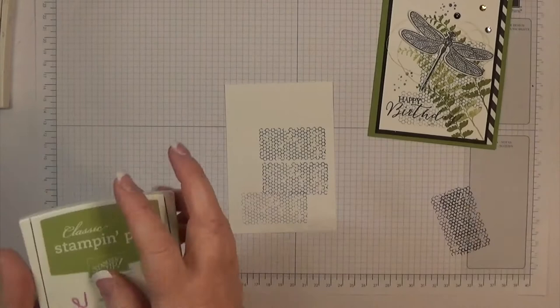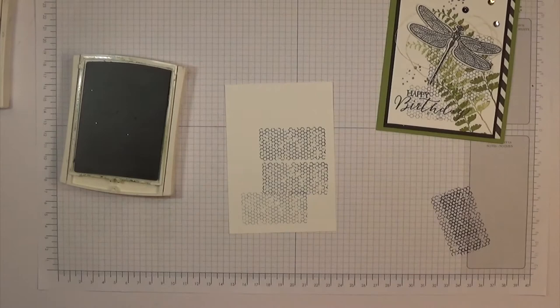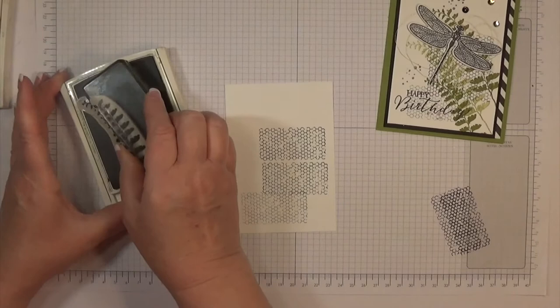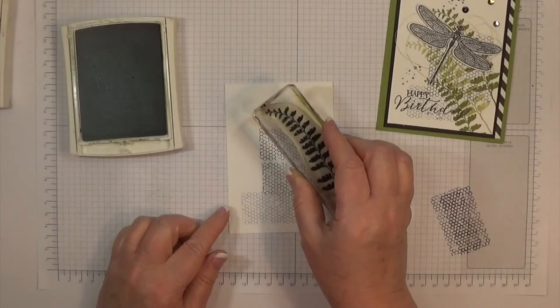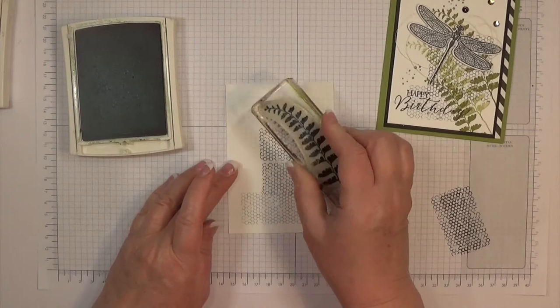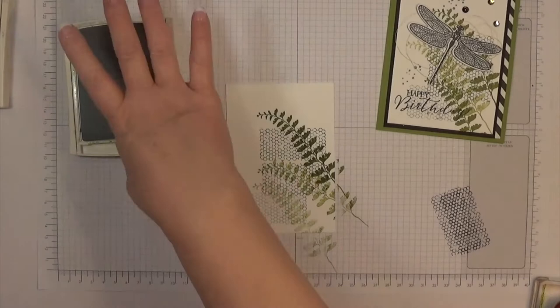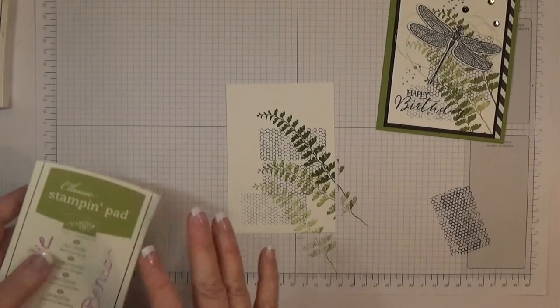We're done with the honeycomb stamp. Now I'm going to stamp the foliage with the Old Olive ink. I'm going to do it one time full strength up top, but then I'm going to do it again, and then one more time down here, just very lightly. So I've got it three times on there.